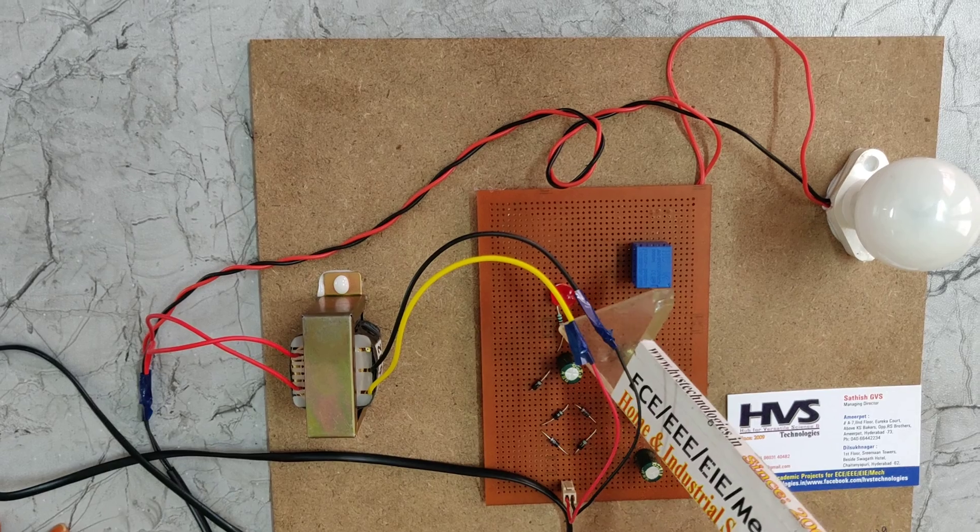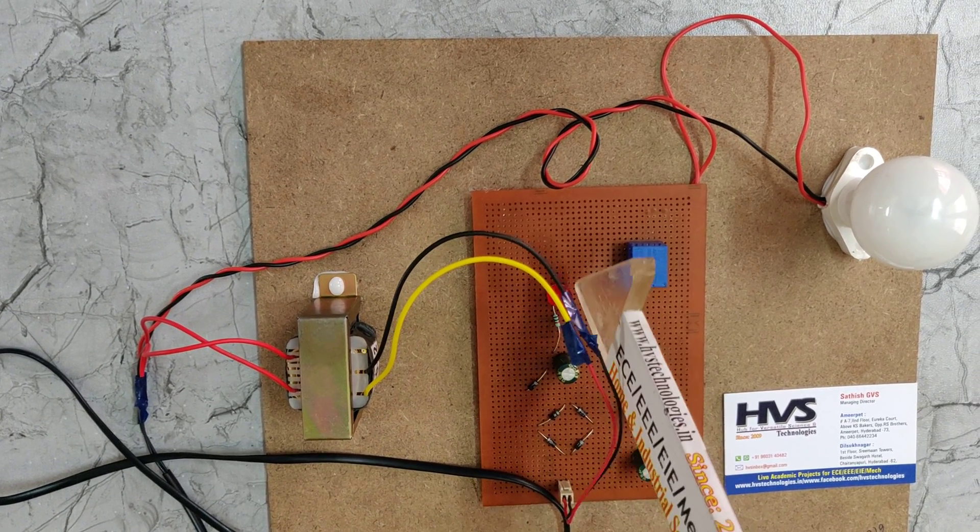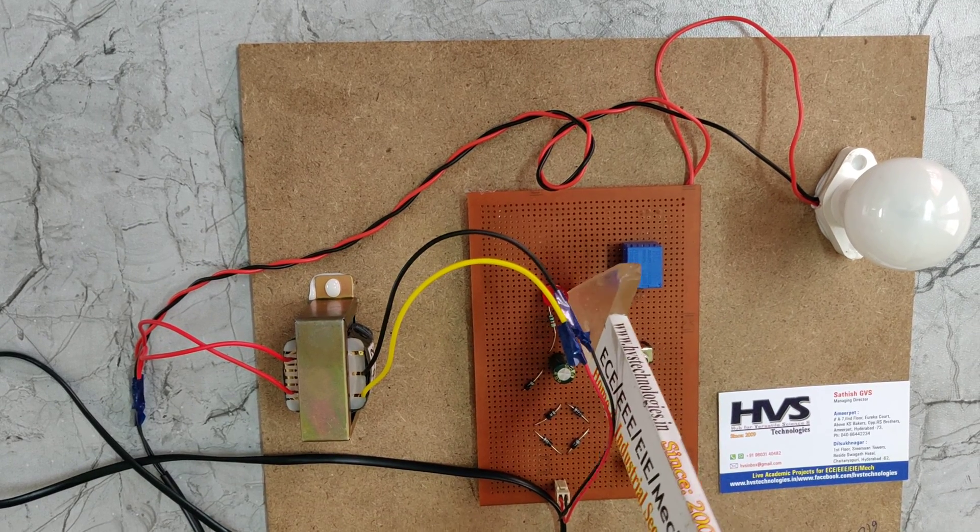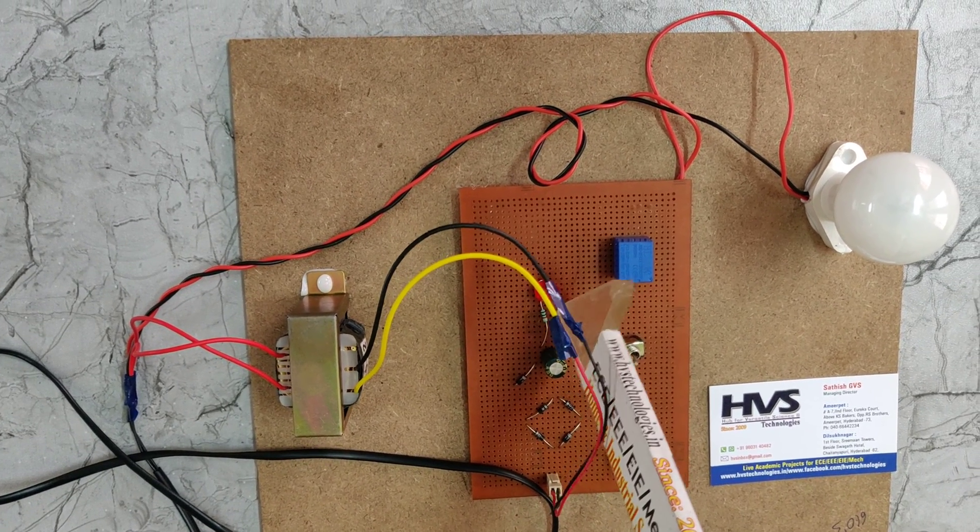Here we are using a resistor. We can't give direct 12 volts to the LED because it requires only 5 volts DC. That's why we are using a resistor to restrict the flow of current.